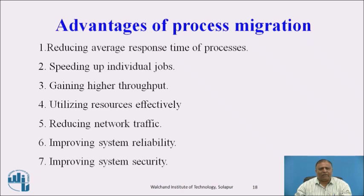Improving System Reliability: Migrate a critical process to a node whose reliability is higher than other nodes. Migrate a copy of a critical process to another node and execute both the original and copied process concurrently on different nodes. If one node faces manual shutdown or gradual degradation, the process can be migrated to another node to continue its execution. Improving System Security: A sensitive process may be migrated and run on a secure node that is not directly accessible to general users, thus providing security to that process.